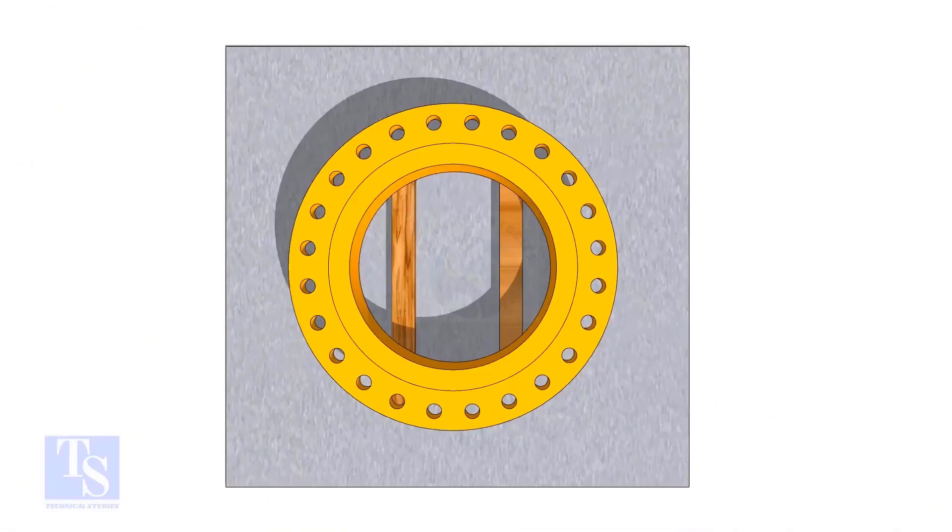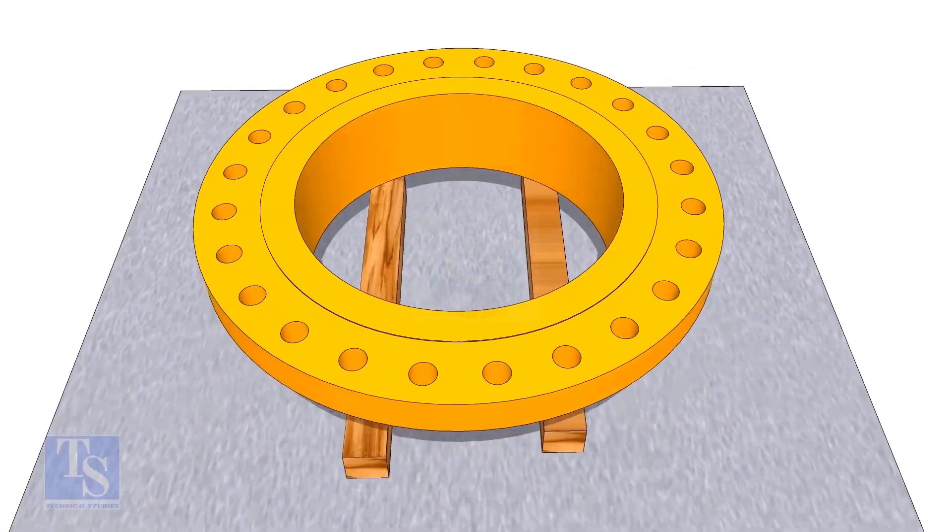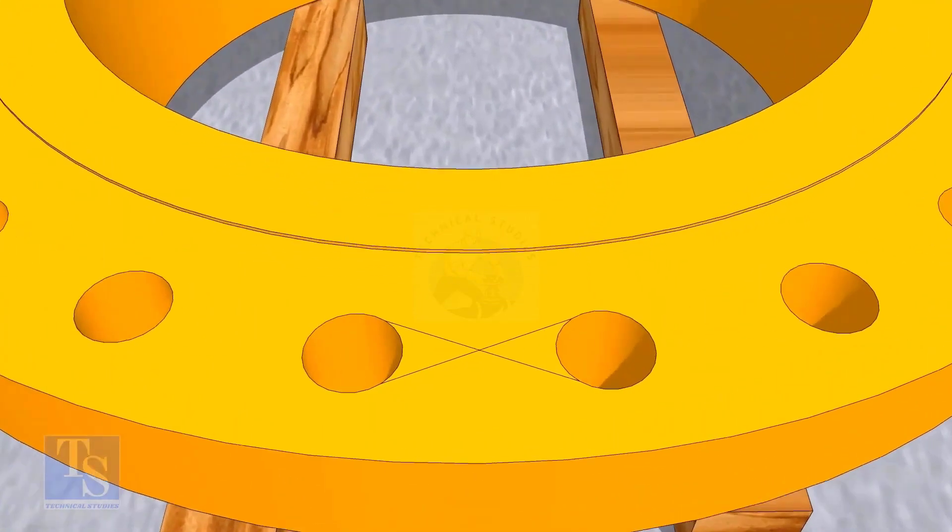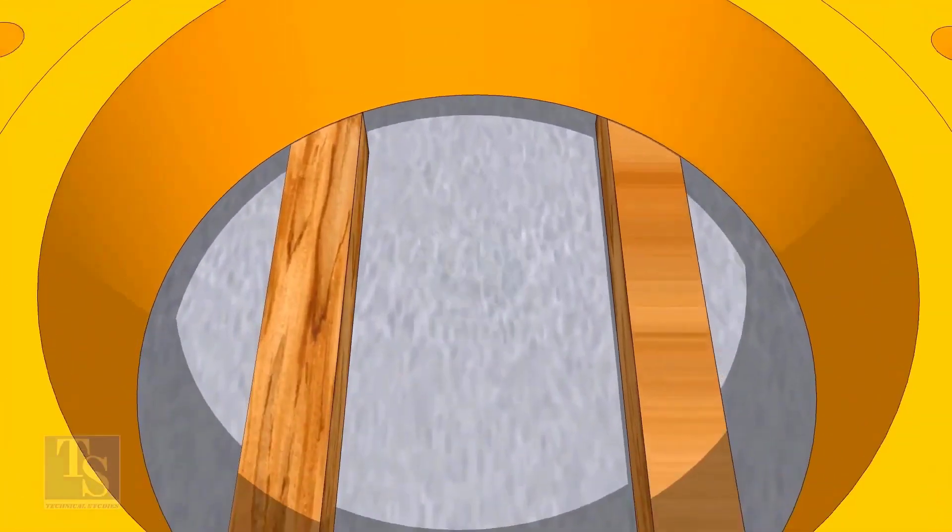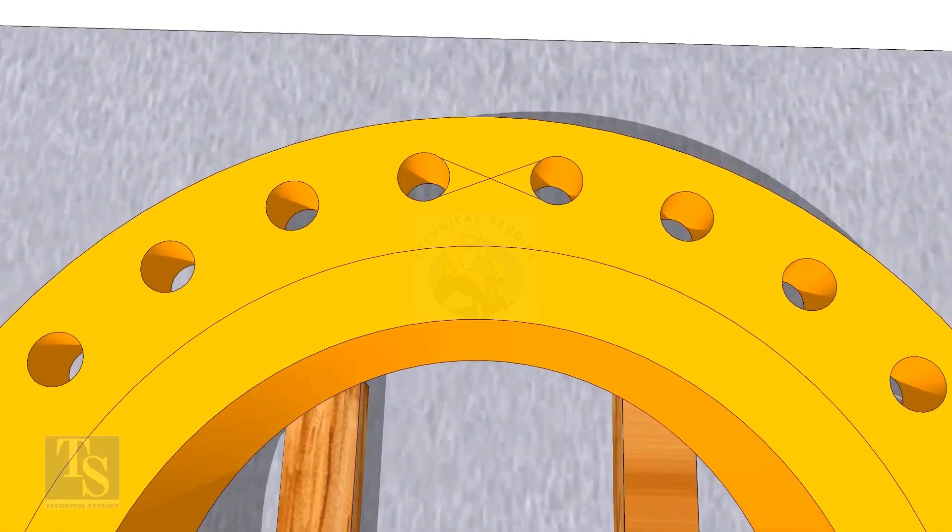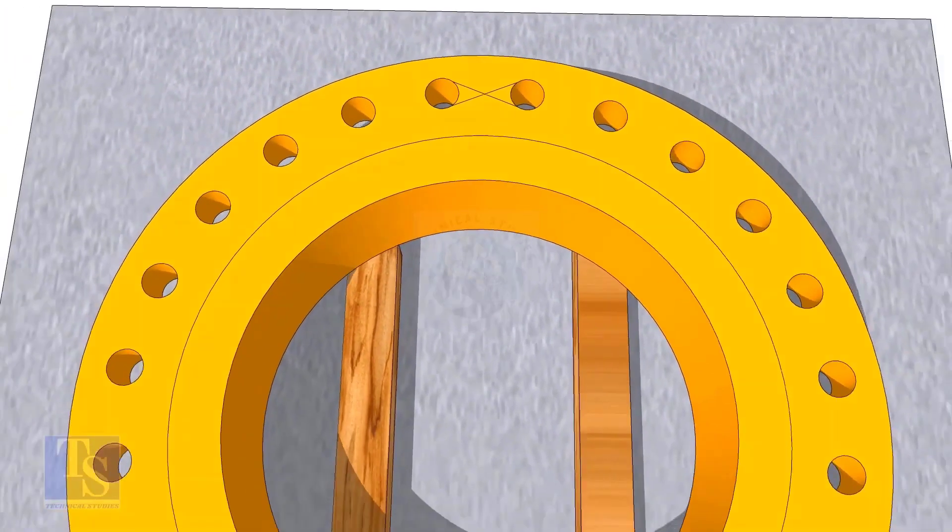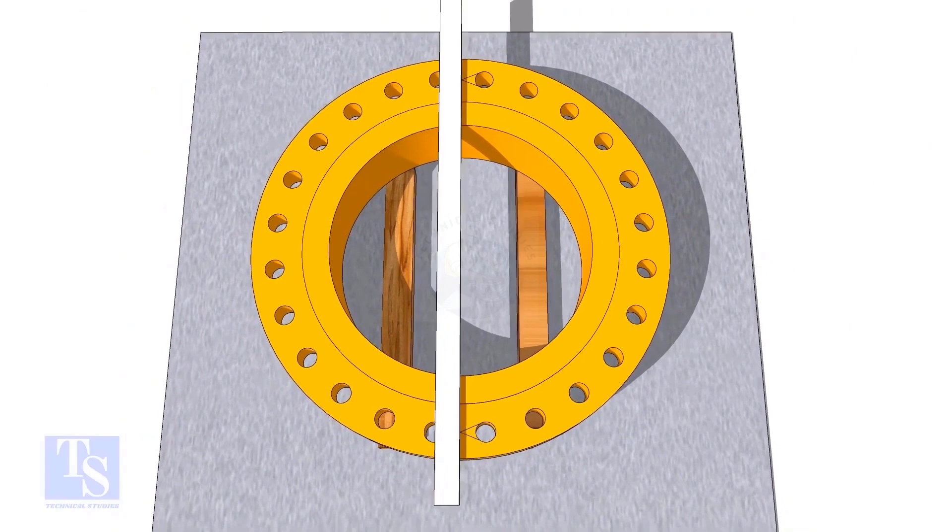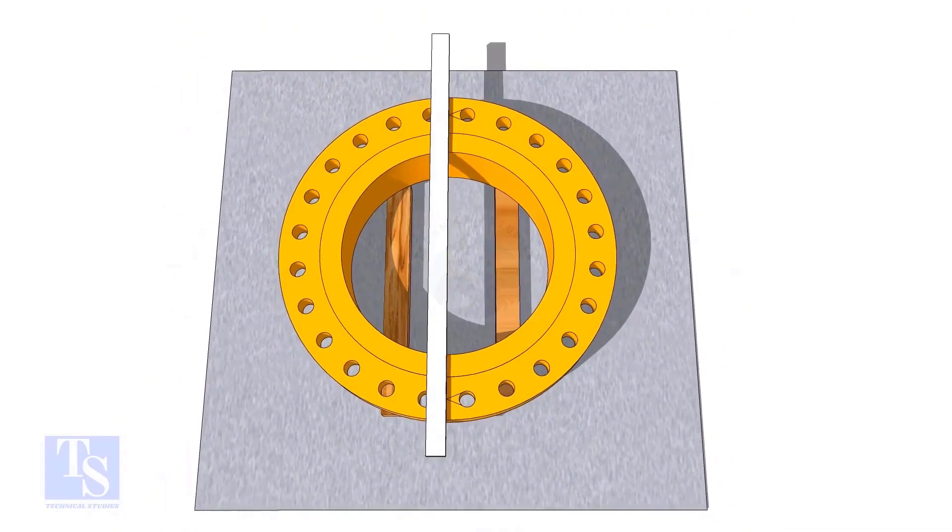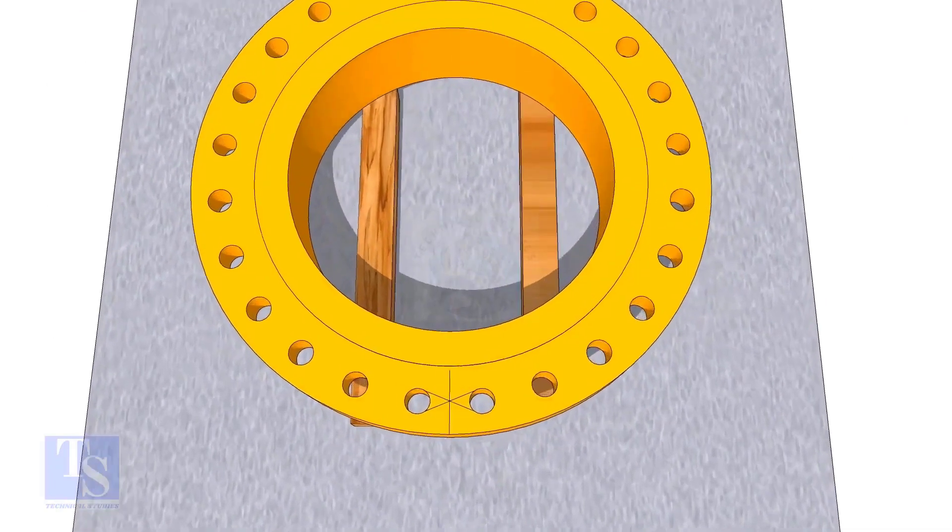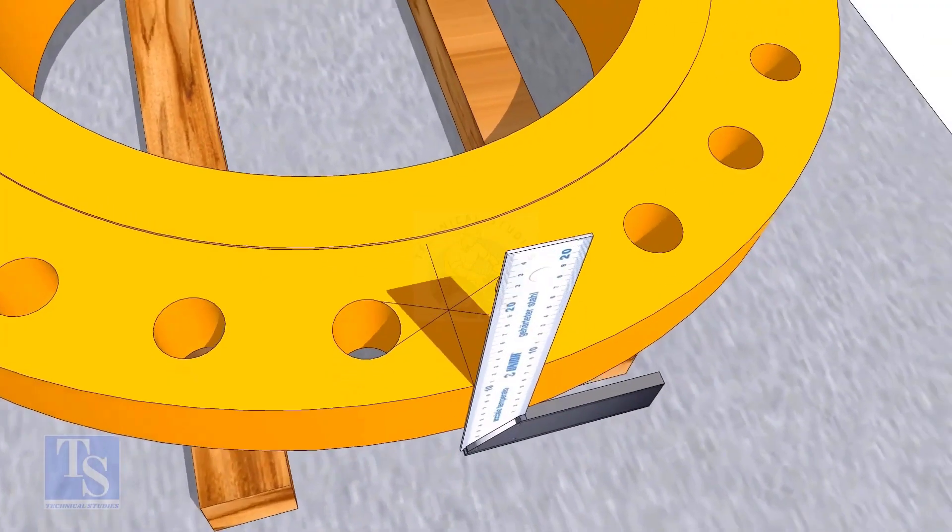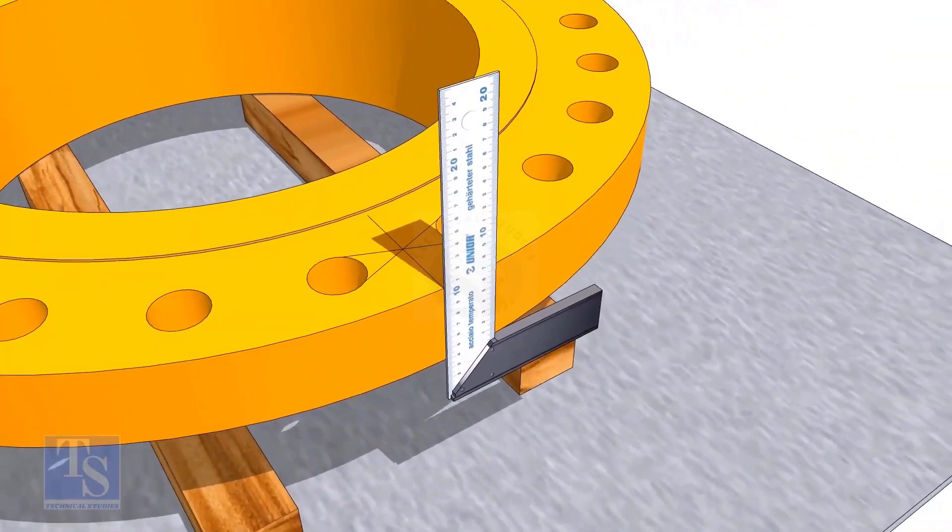In the second method, you need to mark the center line of the flange. Draw tangential lines on two adjacent holes on opposite sides. Draw a line as shown. Transfer the center line to the side of the flange.